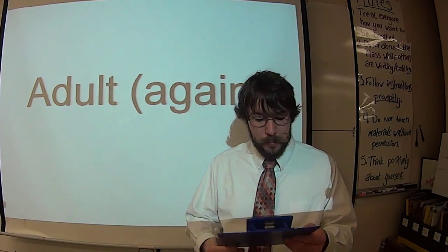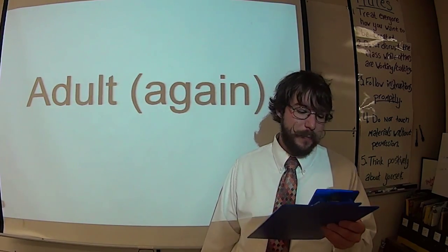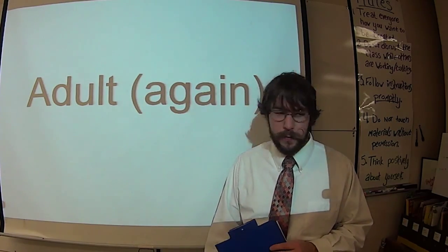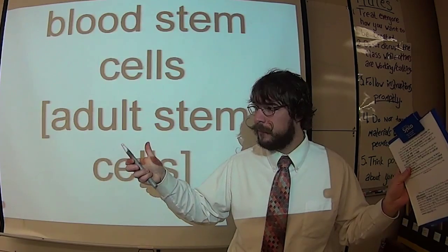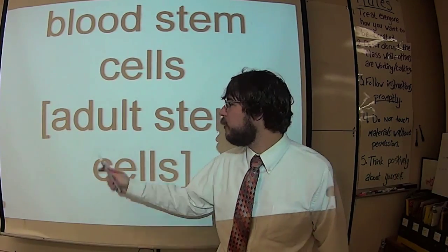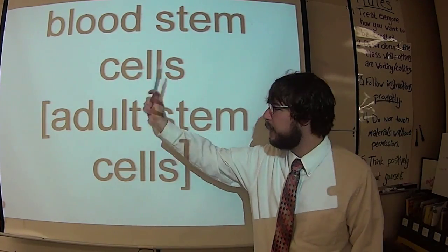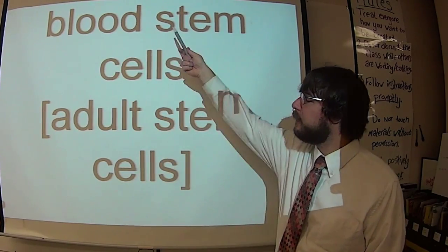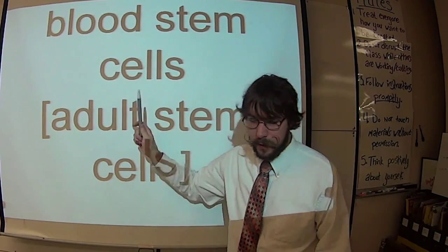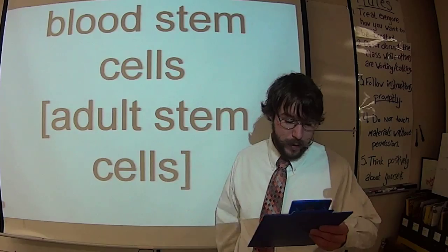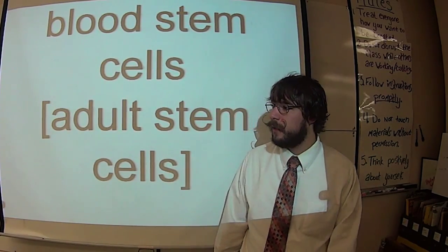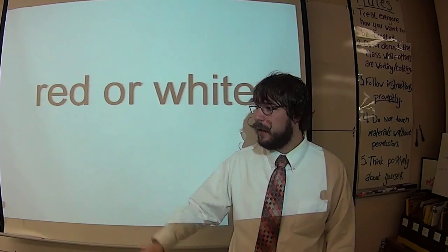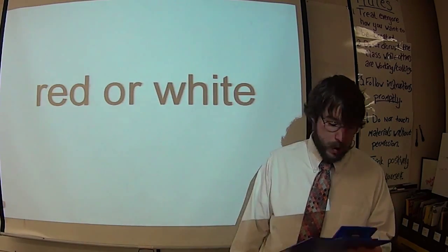For example, blank stem cells can become any type of blank or blank blood cell. What's the imaginative name for the cells that can become blood? That's right. They're blood stem cells, which again are a type of adult stem cells. So blood stem cells are limited. They're adult stem cells that are in your body right now. They can become any type of blank or blank blood cell. The two types of blood cells would obviously be red and or white.